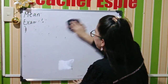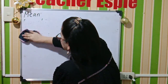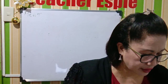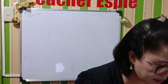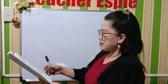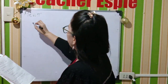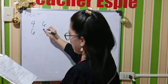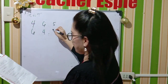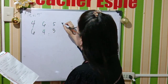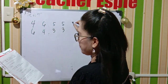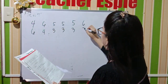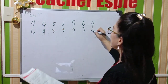The mode is the number that appears most frequently in the data. In this example, the following set of data are: 4, 6, 6, 4, 5, 3, 5, 3, 5, 3, 6, 3, 6, 3, 4, and 2.